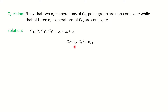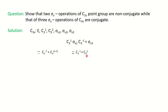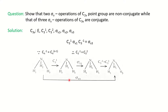To perform the σV1 operation and see whether σV1 forms a class with σV3, we take C3¹ as the similarity transformation and perform all three operations together. We already know that Cn⁻¹ = Cn^(n-1), and here n = 3, so C3⁻¹ = C3². We take the ammonia molecule with C3V point group and perform these three operations one by one.